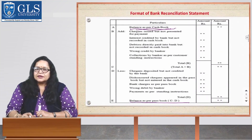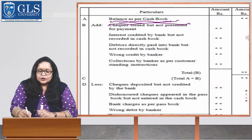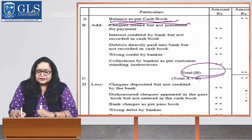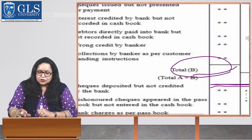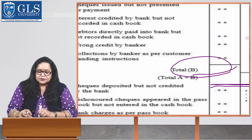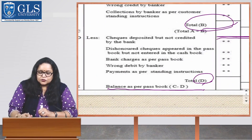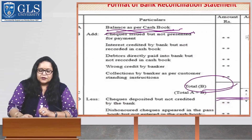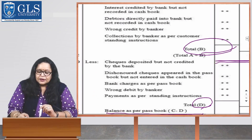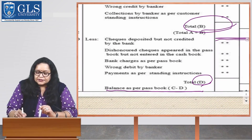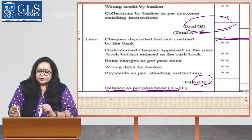To summarize the format: A is the balance as per cashbook. B is the total of all added items. C equals A plus B. D is all items to be deducted. Therefore, C minus D gives the balance as per passbook.